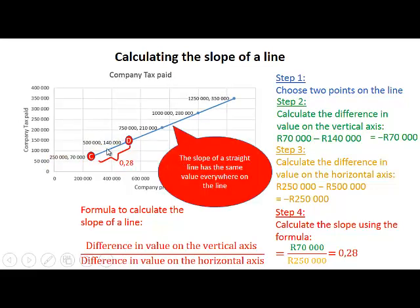As you can see, this is a straight line. The slope of a straight line has the same value everywhere on the line. When we looked at the slope between points A and B, it was also 0.28.